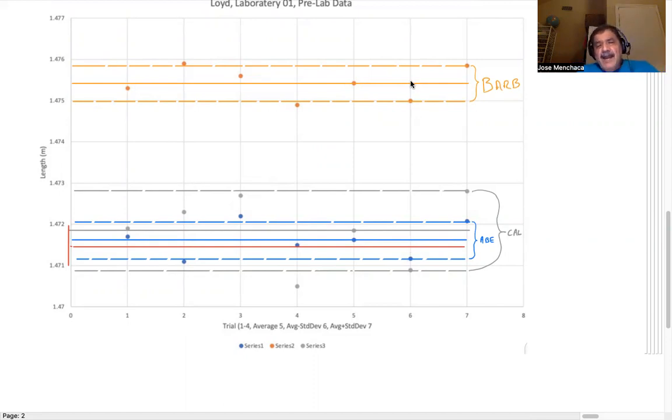And now Cal, well, Cal got close to the actual measurement, but his data, look at the spread. Look at the standard deviation on his. His is pretty wide. And that's why his standard error was higher than both Barb's and Abe's.